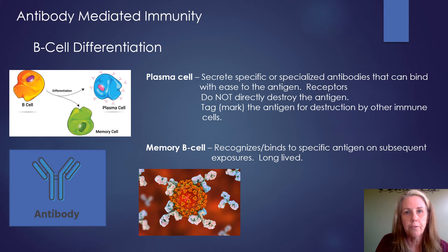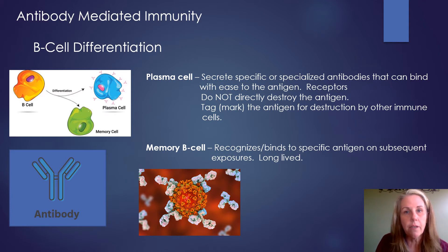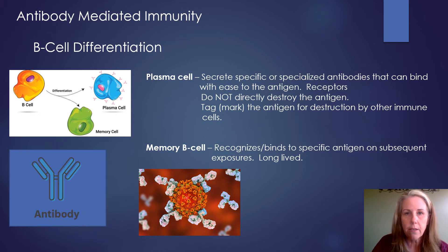The other type of cell that the B cell differentiates into is a memory B cell. Memory B cells, like memory T cells, don't necessarily have a job during that first infection — we want them made. They have the ability to recognize and bind to antigens or pathogens in the future, and we want them to be long-lived. The picture with a red background on the PowerPoint shows a virus with protein spikes in orange, and the lighter colored structures represent antibodies — showing how lots of antibodies can bind to a pathogen.